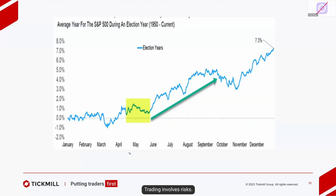One thing to bear in mind for this year — I talked about this in my stats webinar last month. We're only in July at the moment, and there can be dips. Statistically, the second half of July is weak. However, don't be surprised if the stock market made new highs into August or September before a larger correction prior to the US election. This data is the average S&P year during an election year from 1950 to current.